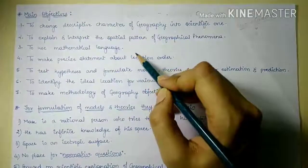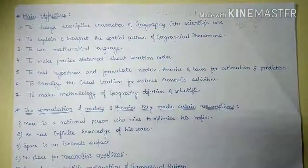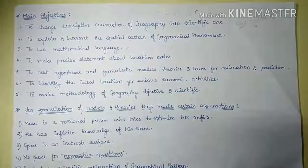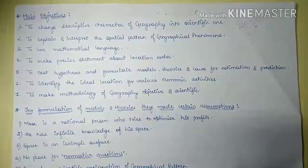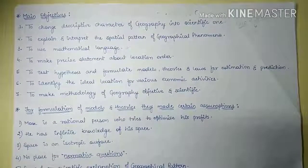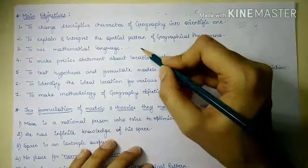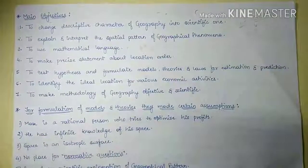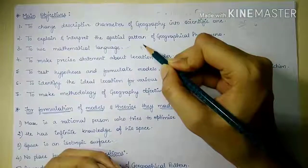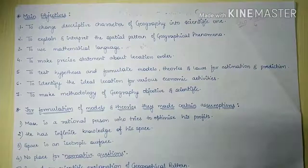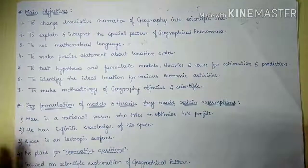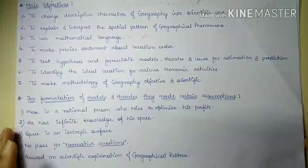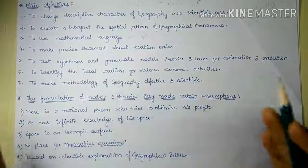The next objective was to use mathematical language. Mathematical language does not simply mean using symbols, but rather using a scientific pattern to explain concepts — like in Köppen's classification of climate, where various climates are classified in the form of symbols like Af, B, etc. These types of scientific languages should be used in geography instead of the language of literature. The next objective is to make precise statements about any location.